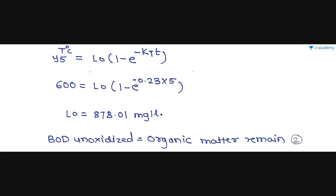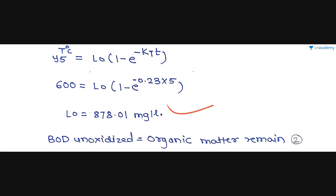To find the ultimate BOD, we use the formula: Y₅ = L₀ × (1 − e^(−K×t)), where Y₅ is given as 600 mg per liter and L₀ is unknown. Substituting K = 0.23 and t = 5 days, we solve for L₀. Putting all the values in, L₀ — the ultimate BOD — is equal to 878.01 mg per liter.